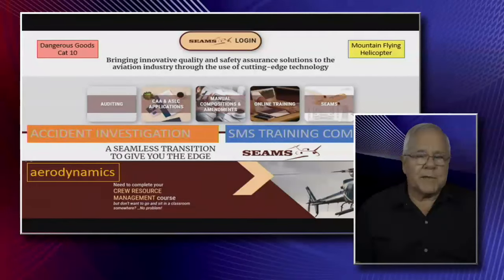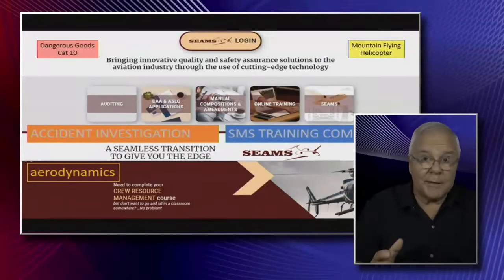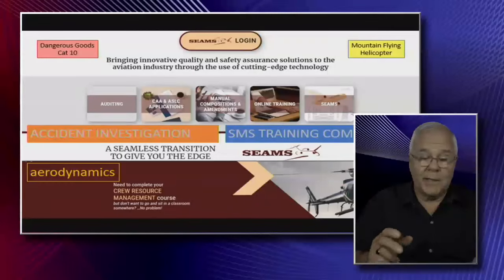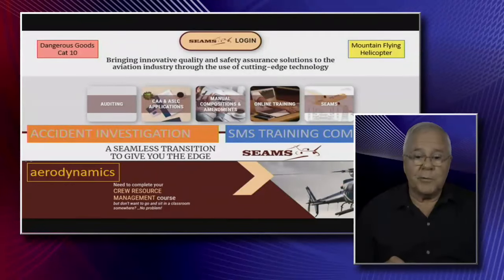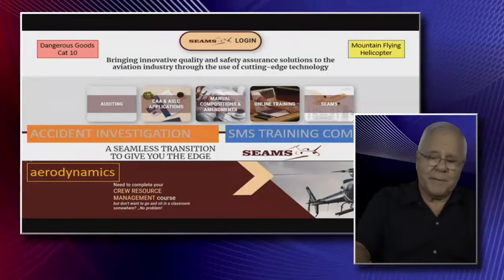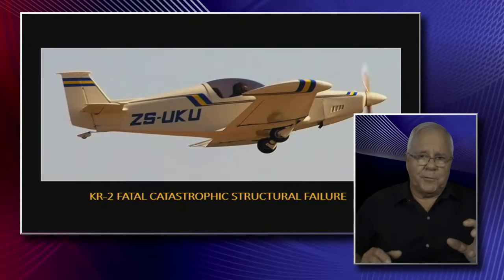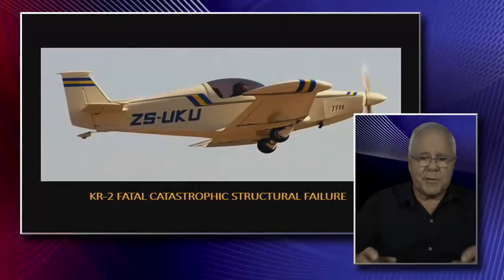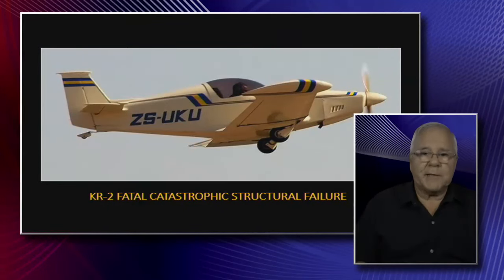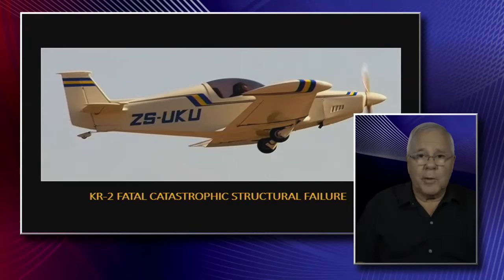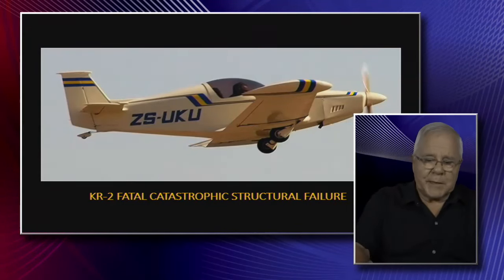Before we get into it, remember Teems Aviation is online — everything you want for your CRM, DGs, and that kind of stuff is available online. The aircraft pictured here is the exact aircraft involved in the accident, where the right wing actually broke off.